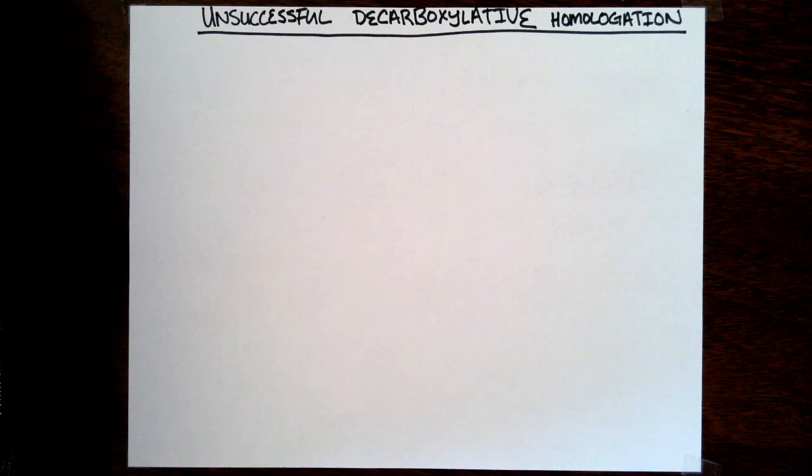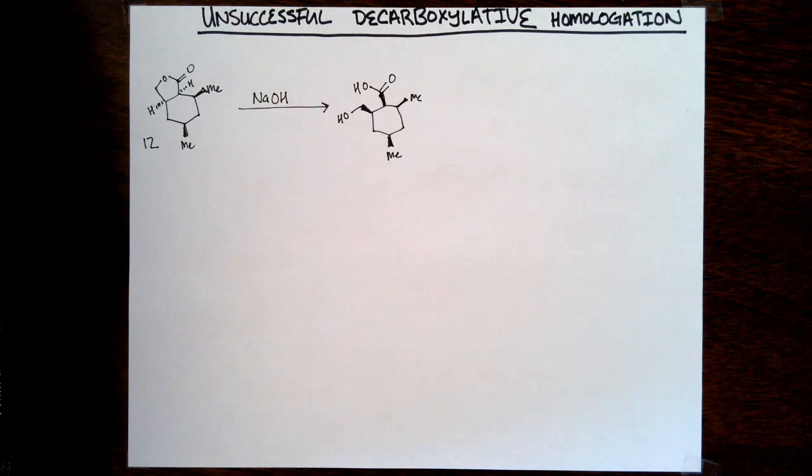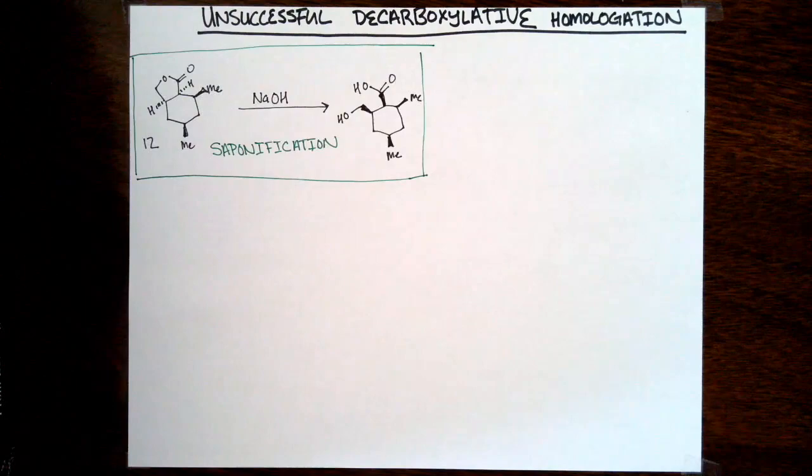Once they were able to access lactone 12, what they really wanted to do was a homologation reaction to add a CH2 or a methylene group between the carbonyl and the cyclohexane ring. They wanted to do a decarboxylation followed by a Giese addition to add that CH2 unit. As you can see in their SI, there was a lot of different attempts before they found a nice solution.